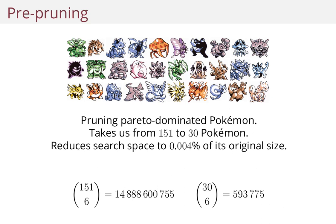And this greatly reduces the search space from almost 15 billion parties to 600,000 parties. So no matter how you solve it, that's a really important thing to realize and implement before you do anything else.